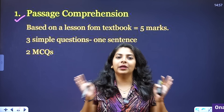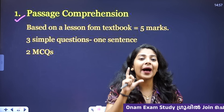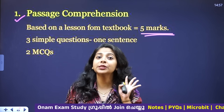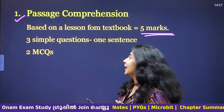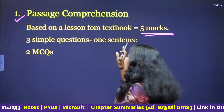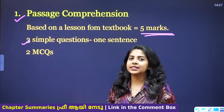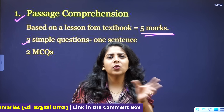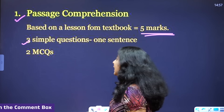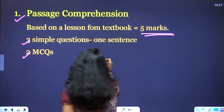You will see a main item — a paragraph. If you are going to talk about the paragraph, it is simple. You have two questions: three simple questions, one sentence. If you have two sentences, you will have two simple questions. That's why you have two MCQs — multiple choice questions. You have a question with an option, then you will answer that question.